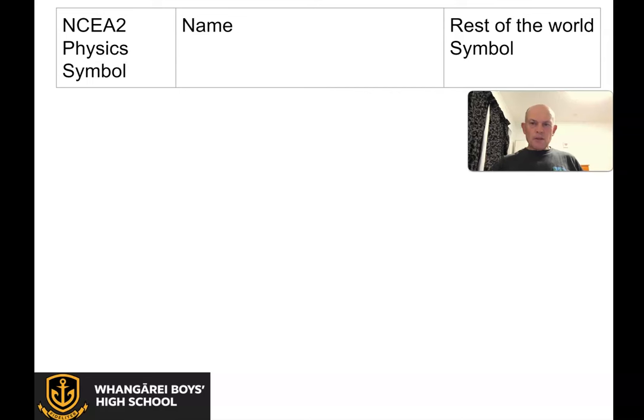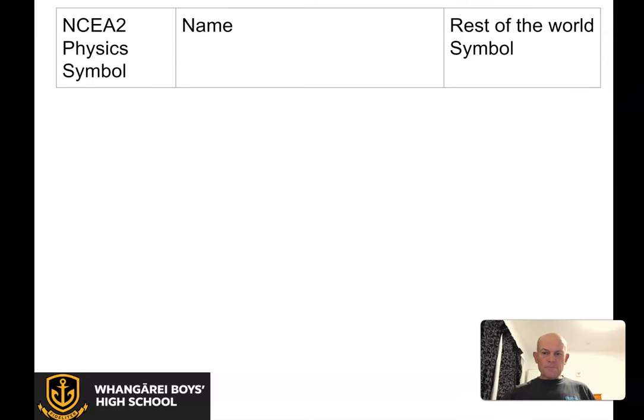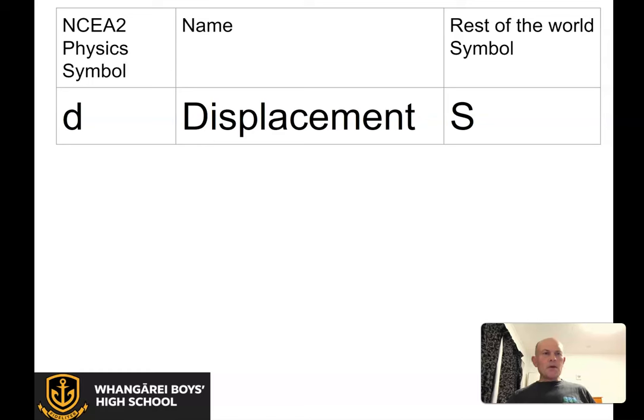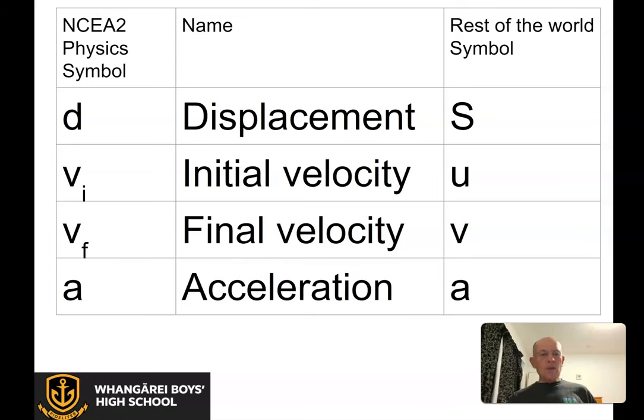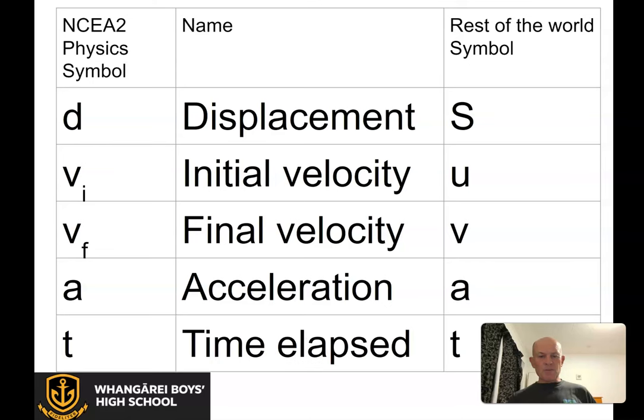The rest of the world uses s for displacement, so it's different from d for distance and diameter. NZQA sticks with d for the whole lot. For the two velocities, final and initial, the rest of the world uses v for final velocity and u for initial velocity—u comes just before v in the alphabet. But we've got v sub i and v sub f. The acceleration has the same symbol, lowercase a, and t for time elapsed.